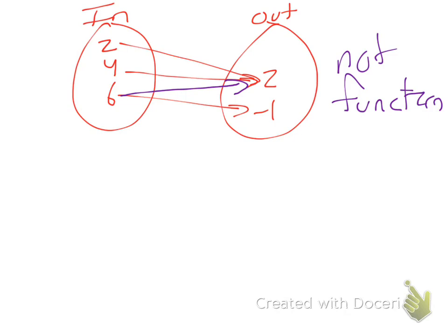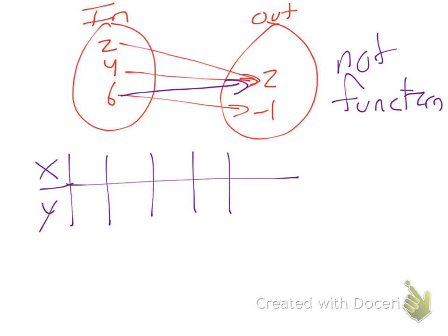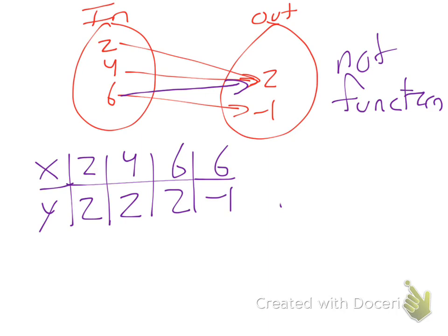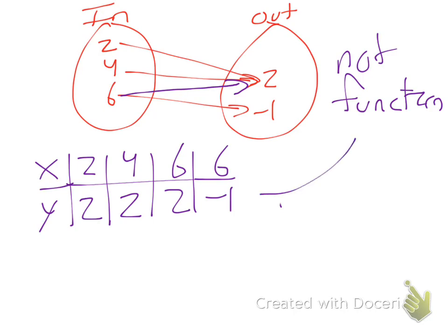I'm using mappings, but they may use a table instead. Sometimes they make their tables horizontally. I have 2, 4, and 6 going in as inputs. As we can see, a 2 goes to a 2, a 4 goes to a 2, a 6 goes to a 2 — but a 6 also goes to a negative 1. This is not a function. Looking at the table, how can I quickly tell? Look at the inputs. All I have to do is look for whether the inputs ever repeat. There's a 6 here and a 6 here — then check: do they go to the same number? No. Therefore, it's not a function, because every time you put a number in it needs to go to the same number.